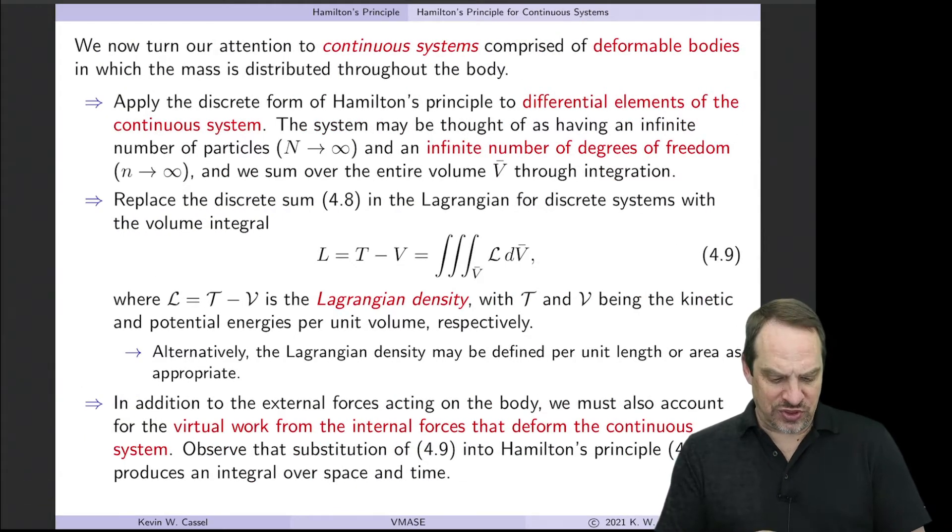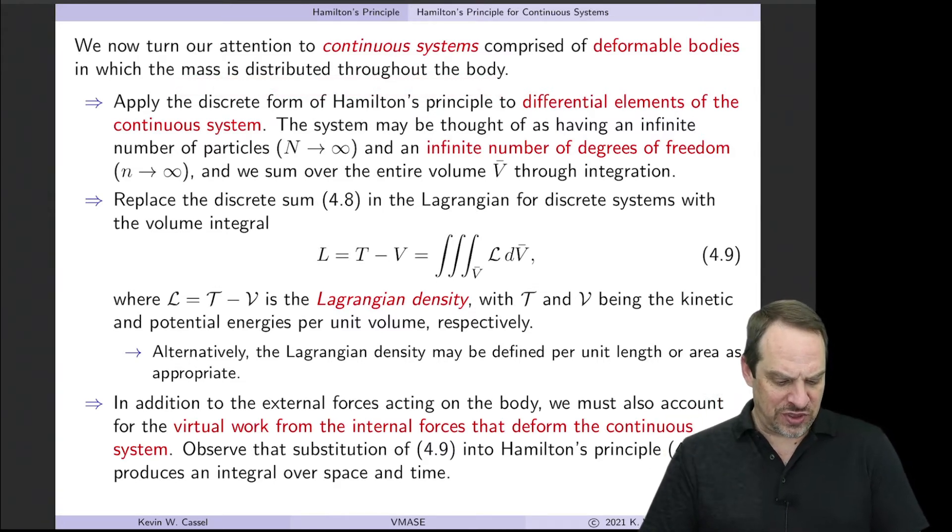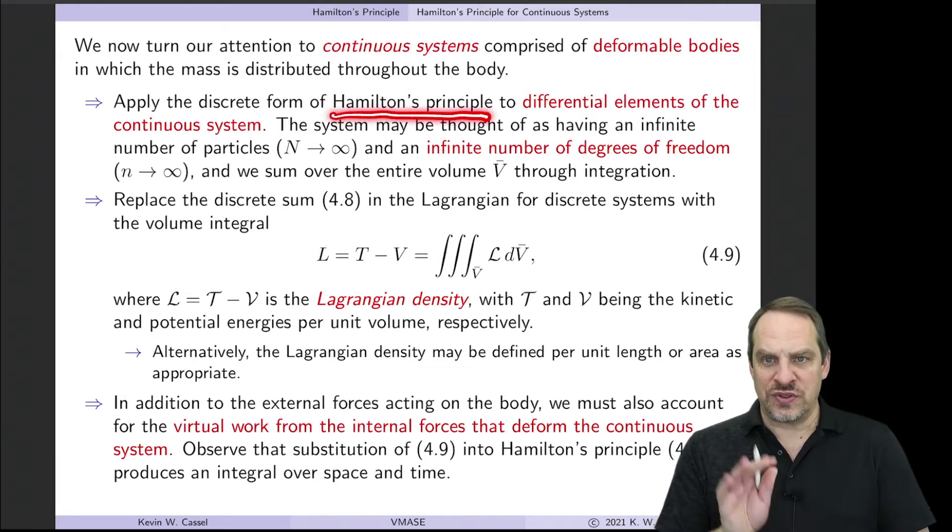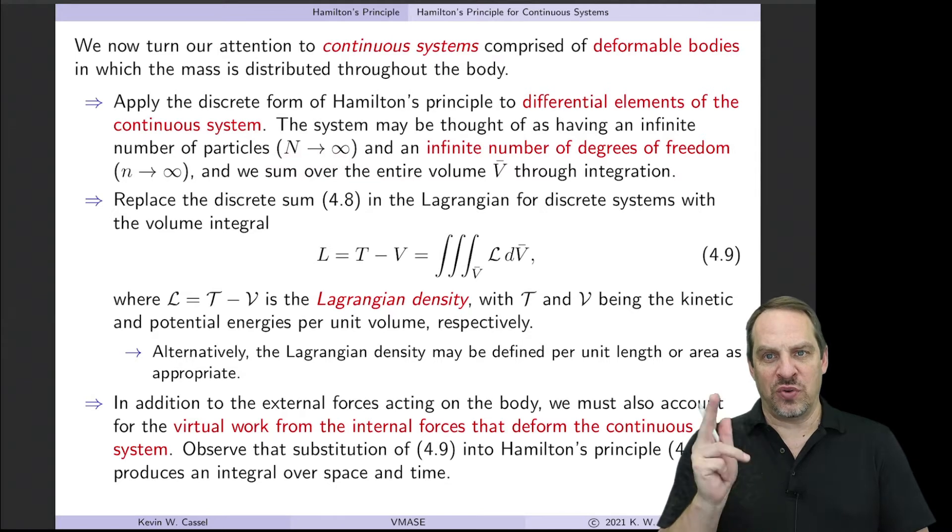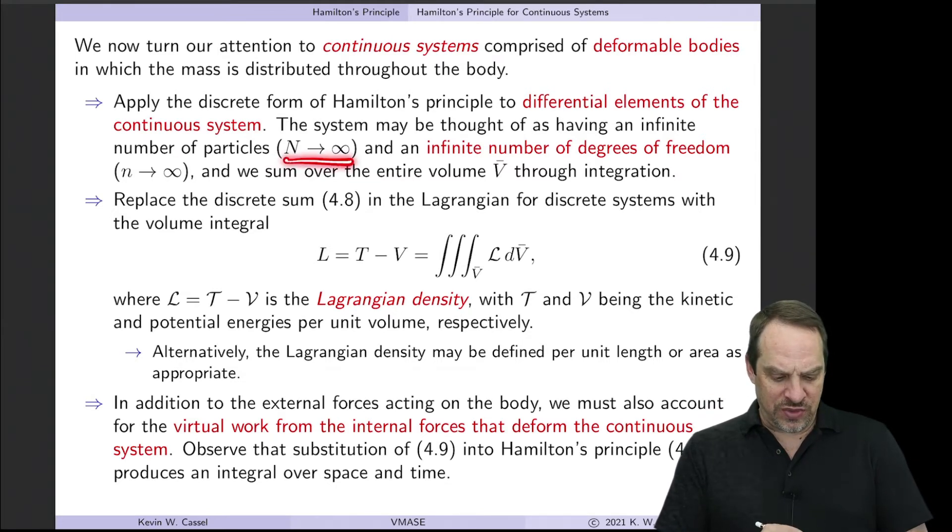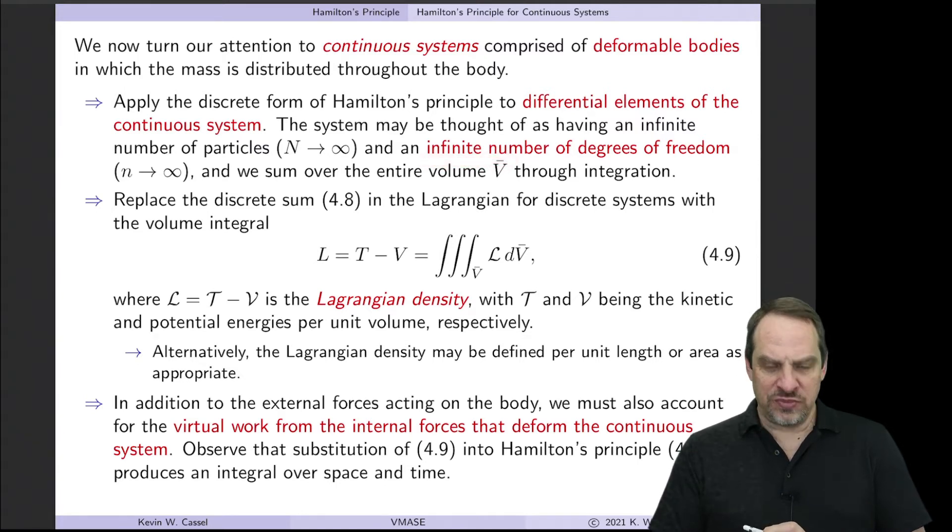Now, how does this look for continuous systems? So continuous systems now, we have bodies that are deformable. They're no longer rigid, so they can be compressed. You can strain them. And the mass is distributed throughout the body. So rather than point masses, the mass can be distributed throughout the continuous body. So we're going to apply Hamilton's principle, the same Hamilton's principle as before, but now to each of an infinity of differential elements that comprise the continuous system. So now capital N, the number of those elements, the number of quote-unquote particles, is going to be infinity. So we have an infinity of infinitesimally small pieces of the solid or fluid. So we will also have an infinite number of degrees of freedom. So big N and little n are both infinite now. And we need to sum over the entire volume of the system through integration. So rather than being a discrete sum, it's going to be an integral sum.